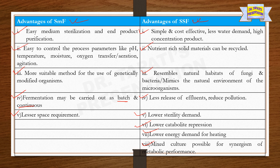Mixed culture is possible for synergism of metabolic performance in the SSF process. In the last few decades, various types of SSF products including food and food ingredients, agro-industrial products, pharmaceutical products, and many more have been documented. For alpha-amylase production, both processes are fruitful at industrial scale, and a lot of experiments on alpha-amylase production have been conducted in both SMF and SSF processes.